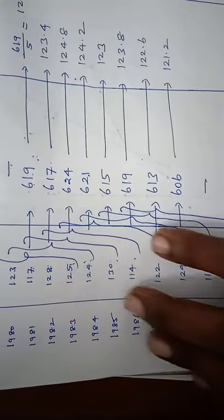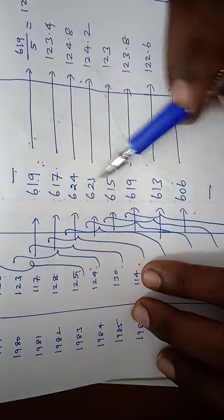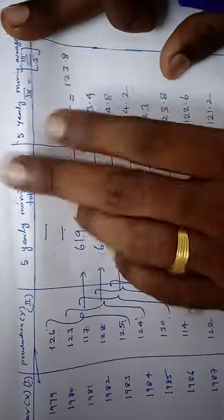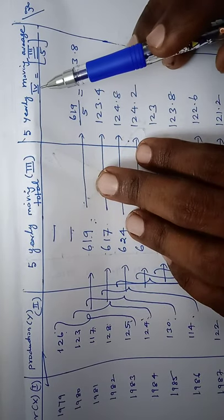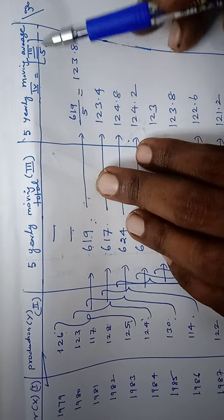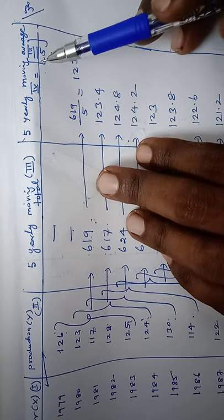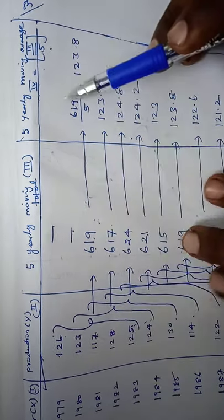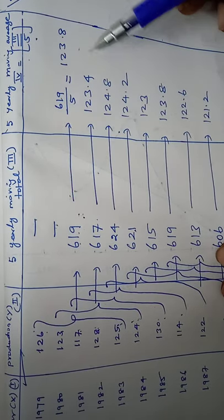Finally, we compute the 5-yearly moving average. The formula is: 4th column = 3rd column ÷ 5. We divide all the 3rd column values by 5 to get the 5-yearly moving averages.